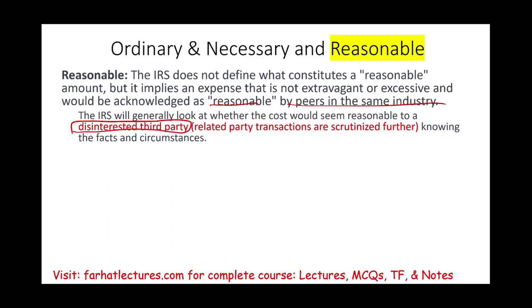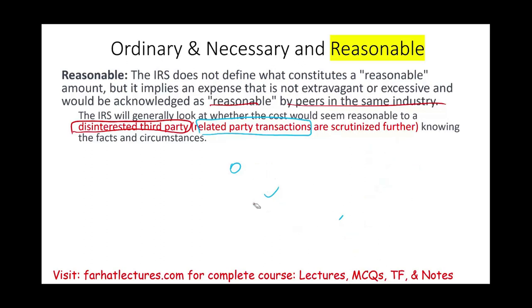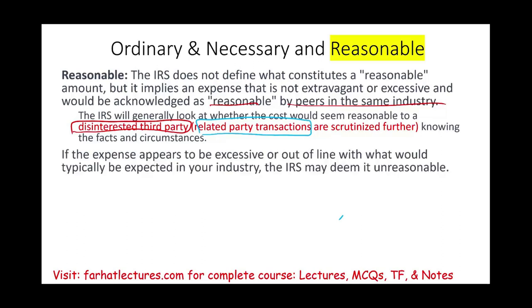Bear in mind, if the transaction is between related parties — meaning between the owner of the business and the business itself — the IRS will scrutinize it more closely. For example, if you have an S corporation and the owners rent their property to the S corporation, the IRS will look at it from a third-party perspective. If the expense appears to be excessive or out of line with what would typically be expected in your industry, it will be deemed unreasonable.